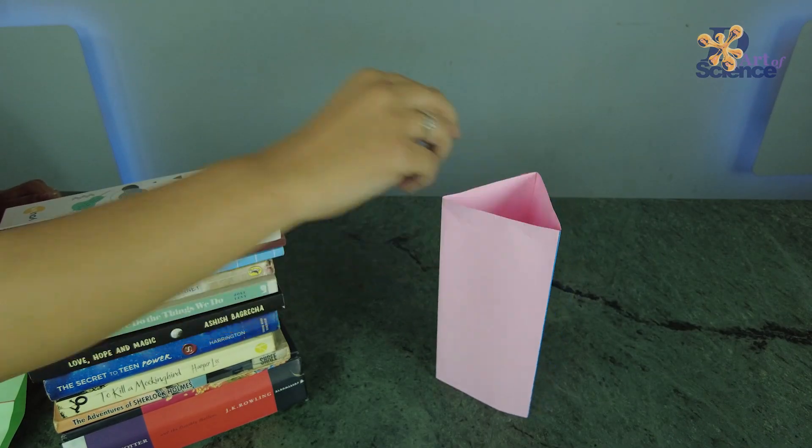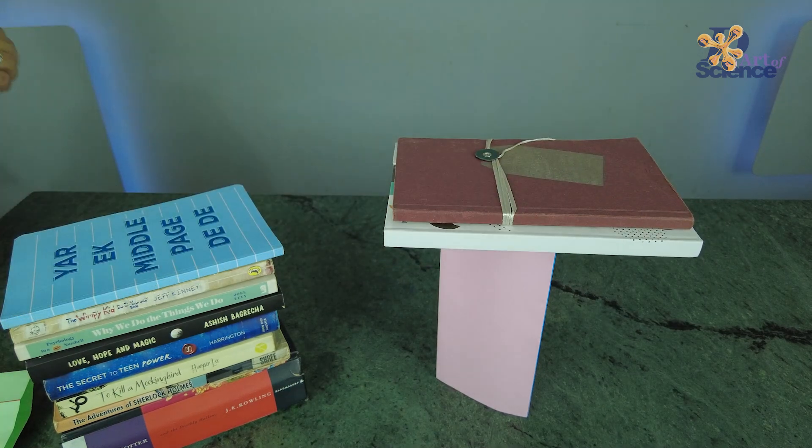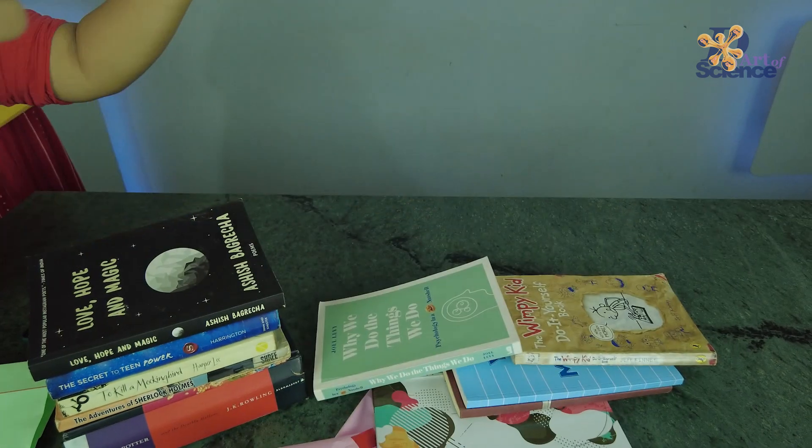Let's try the triangular column next. Looks like the triangular column may be a little better than the others. It took 5 books.